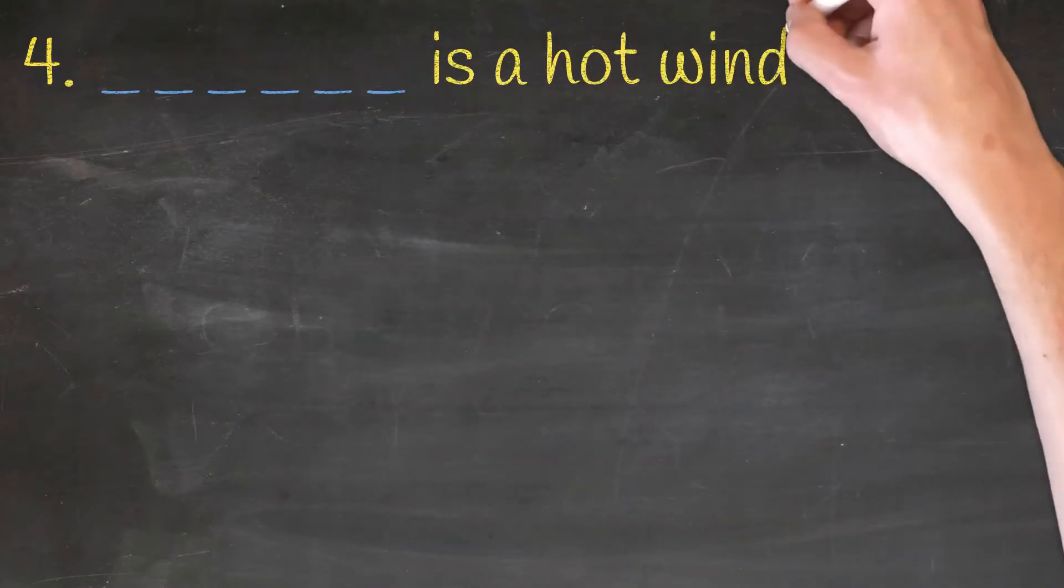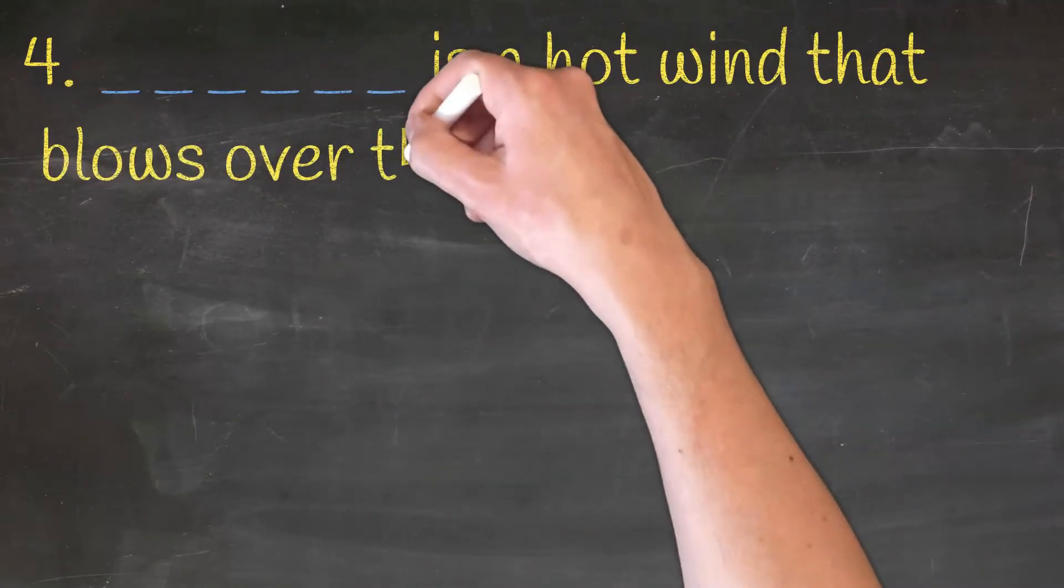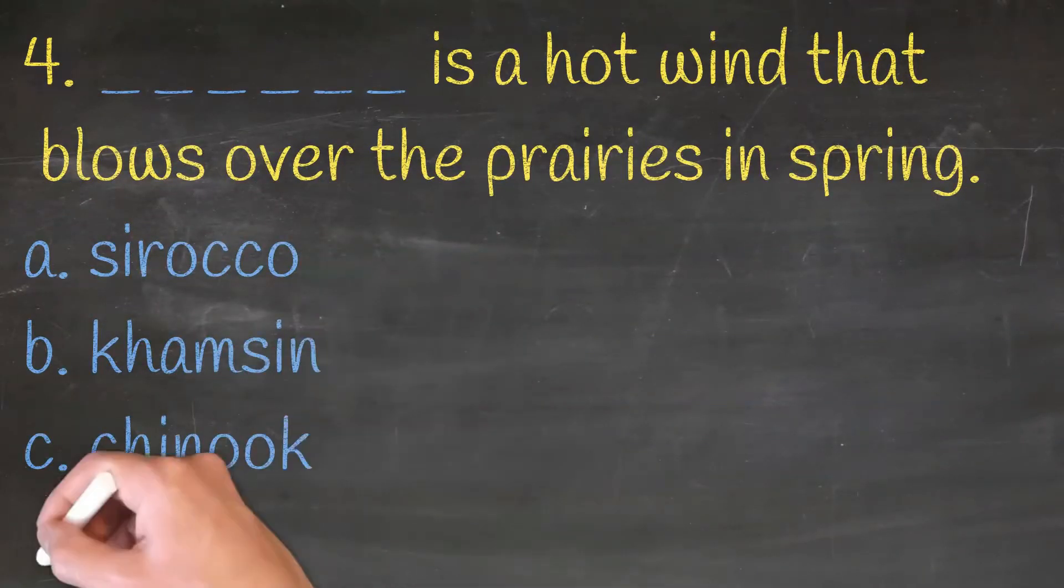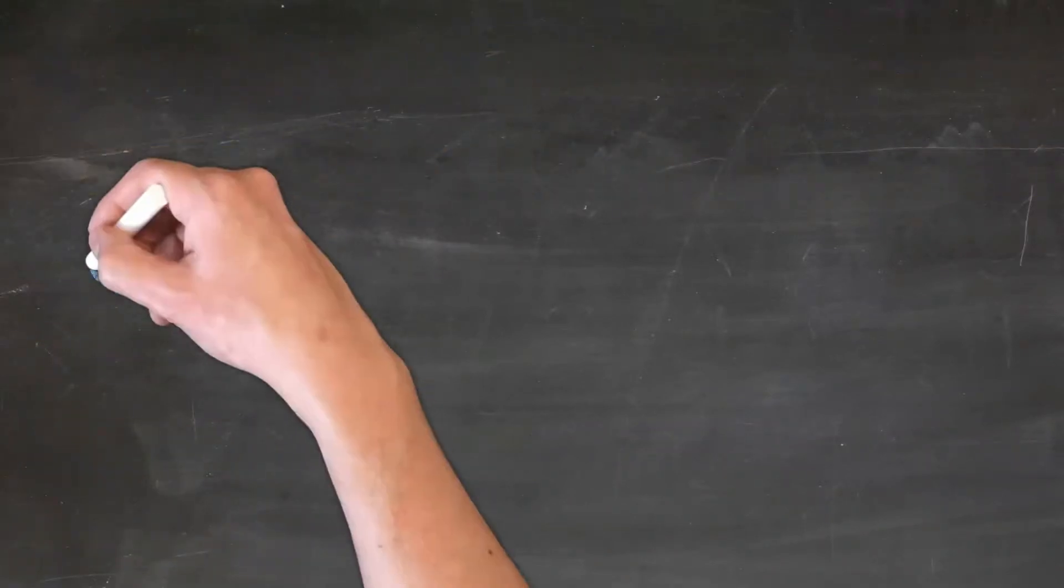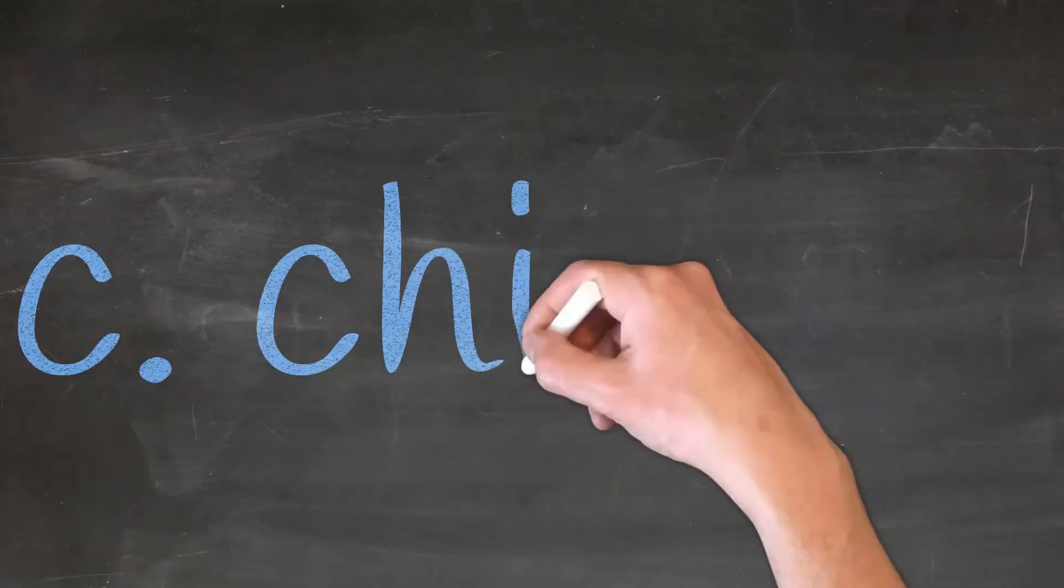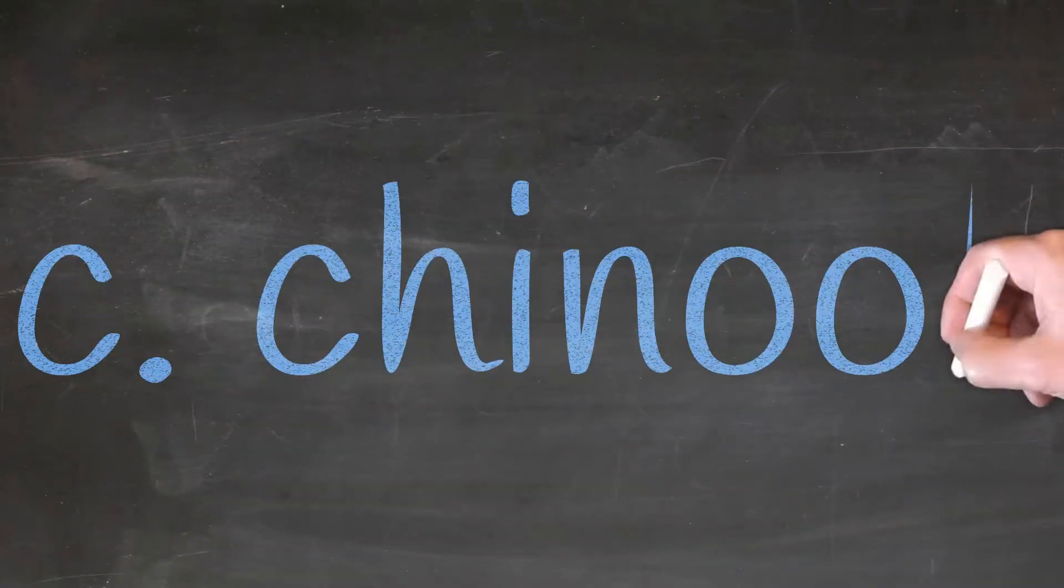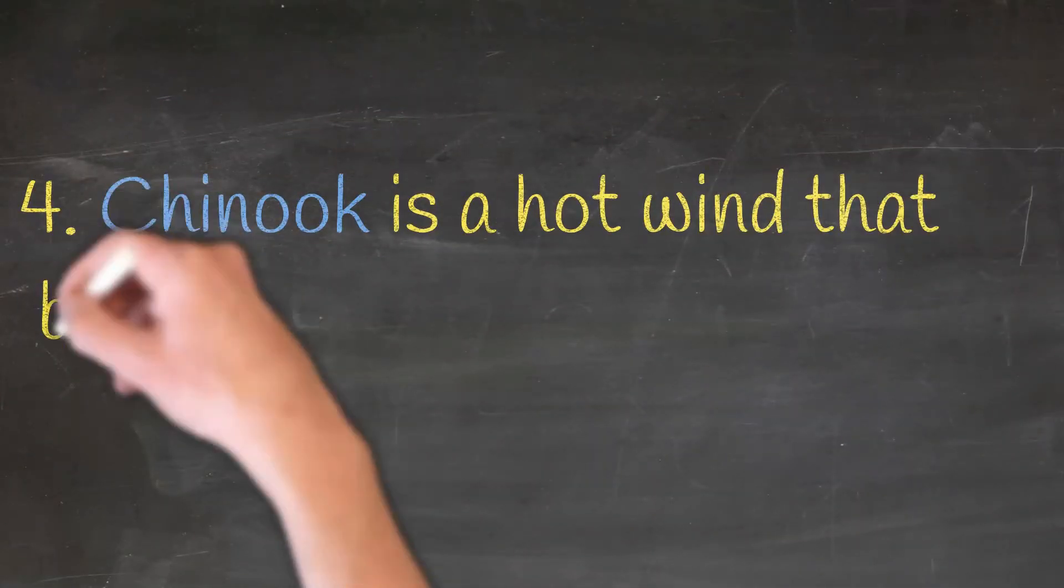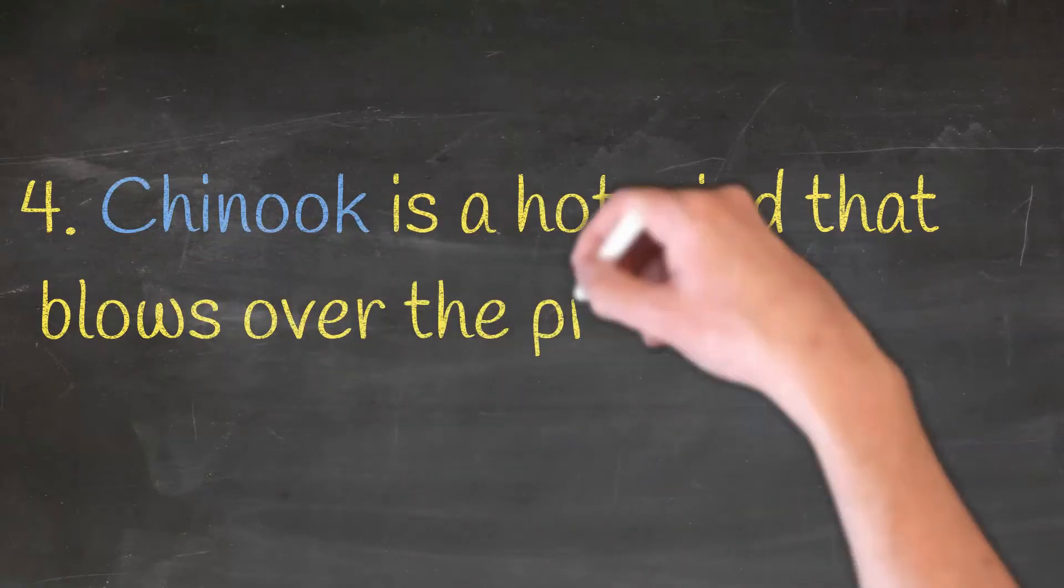Dash is a hot wind that blows over the prairies in spring. Taroko, camson, chinook or mistral. And the correct answer is c, chinook. Chinook is a hot wind that blows over the prairies in the spring.